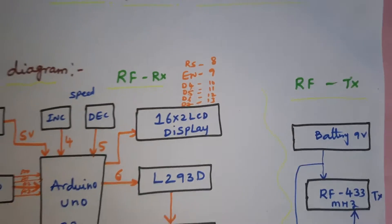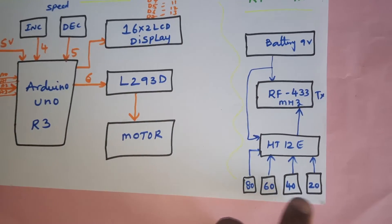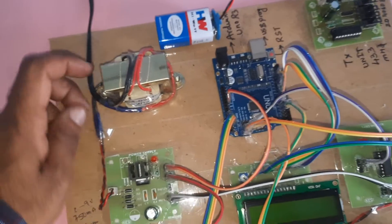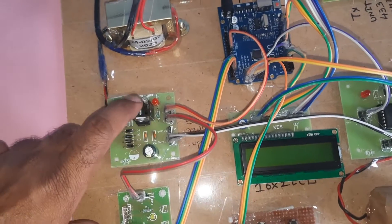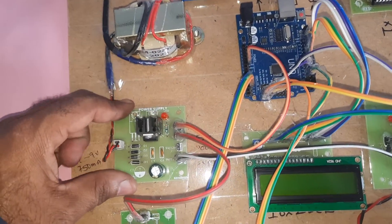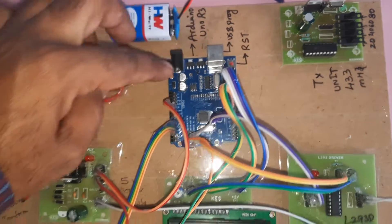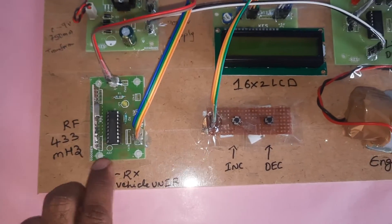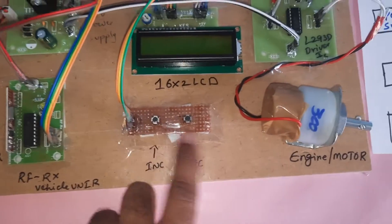The speed-restricted areas use RF 433 MHz with speed limits of 20, 40, 60, and 80. We are using a 230V input step-down transformer with 9V output, AC bridge rectifier, filter capacitor, 7805 regulator, one LED, 5-volt power supply module, Arduino Uno R3 board, a reset button, USB programming, RF 433 MHz receiver module, and HT12D decoder IC with two switch buttons.